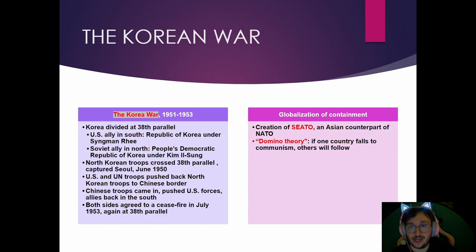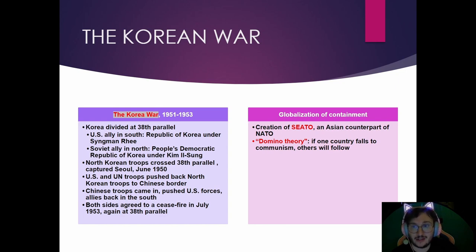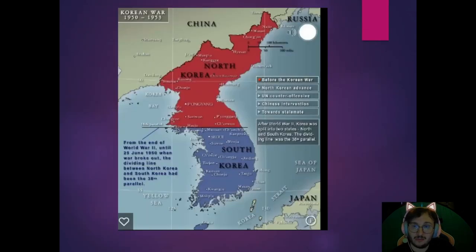Let's talk about some wars in Asia. Most of these are going to be proxy wars during the Cold War. Russia and the United States never officially fought directly, but both countries fought indirectly in third-world nations — for example, Russia invaded Afghanistan and America helped the Afghan rebels. America has two examples of these proxy wars in Asia: the Korean War and the Vietnam War.